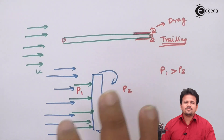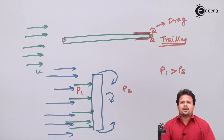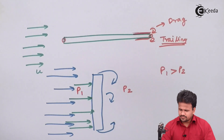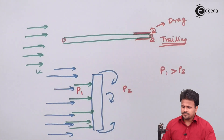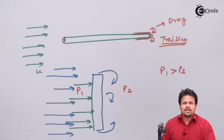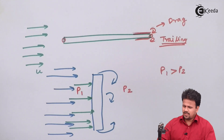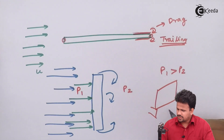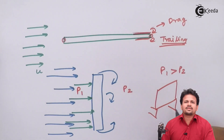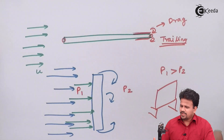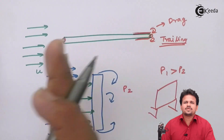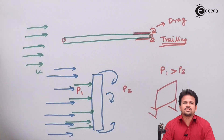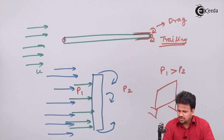One example we can take for a bluff body is an advertising hoarding. There is a large amount of wake in advertising hoardings. If we observe, the majority of hoardings are rectangular in shape. When they are rectangular in shape, the wind blowing perpendicular to the direction of the surface may carry the hoarding with it. So there is a large amount of drag force involved in that.